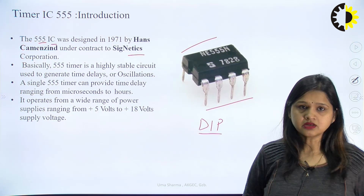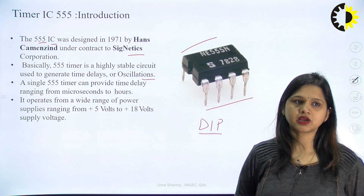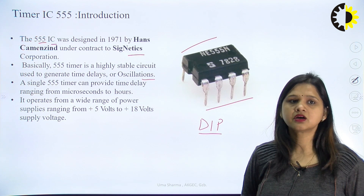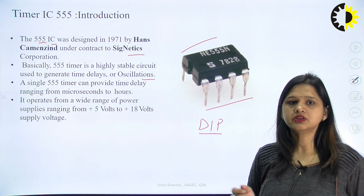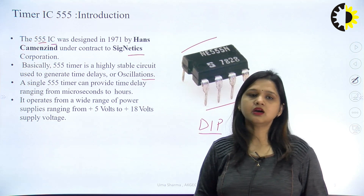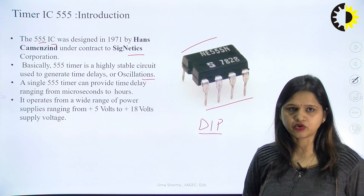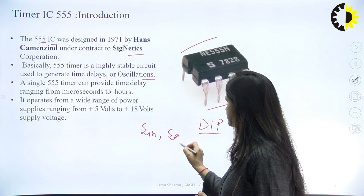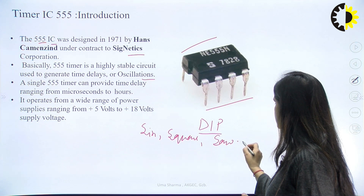Basically, this timer is a highly stable circuit that can generate time delays and oscillations. With the help of this 555 timer IC, we can generate any delay or oscillations. It is a waveform generator kind of circuit — we can generate waveforms like sine wave, square wave, triangular wave, and sawtooth wave, which are required for the operation of any circuit.